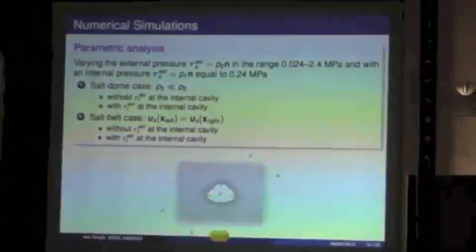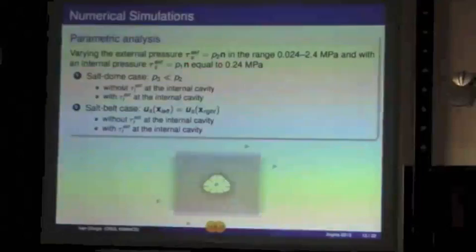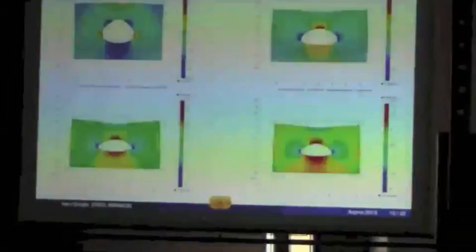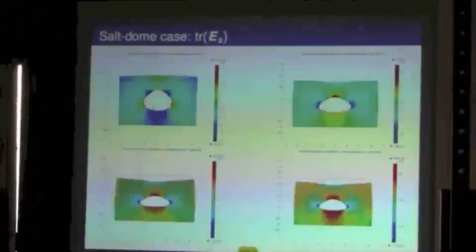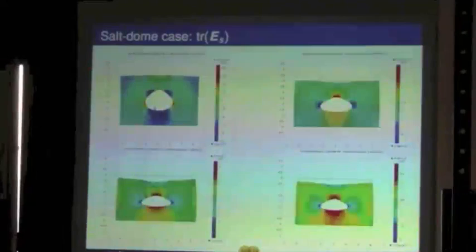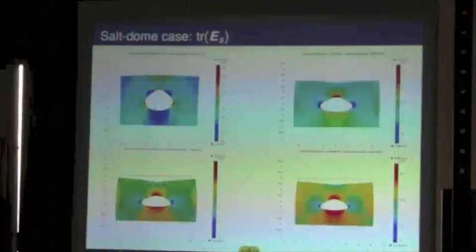In particular, in our simulation we fix the pressure inside the cavity and change the pressure outside. In this picture for the salt dome case, here and here the pressure is very low so there is dilatation in this direction. We have the same pressure inside the cavity for all simulations and an increasing pressure here. In this case we have the same pressure inside and outside. Here we have pressure outside greater than inside, and here much greater pressure outside.